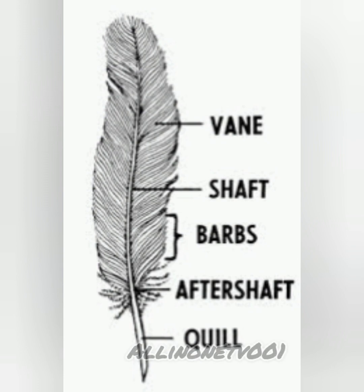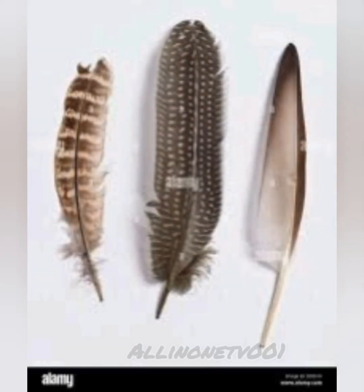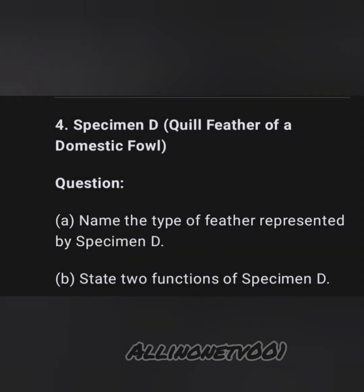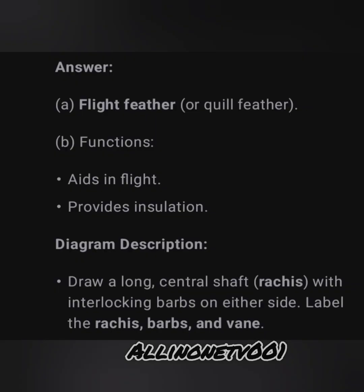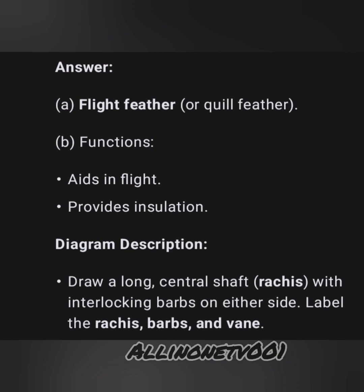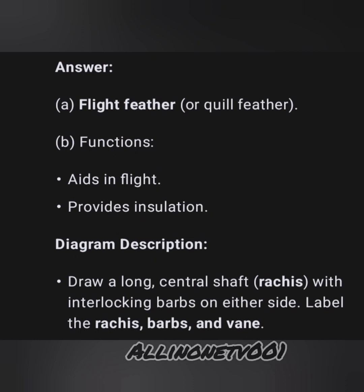Specimen D is a quill feather from a domestic fowl, as shown in the diagram. Question A: name the type of feather represented by specimen D. Question B: state two functions of specimen D. Answer A: flight feather or quill feather. Answer B — functions: aids in flight, provides insulation. The diagram is there for reference.